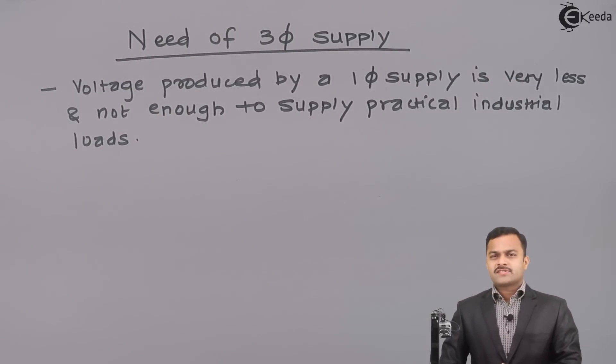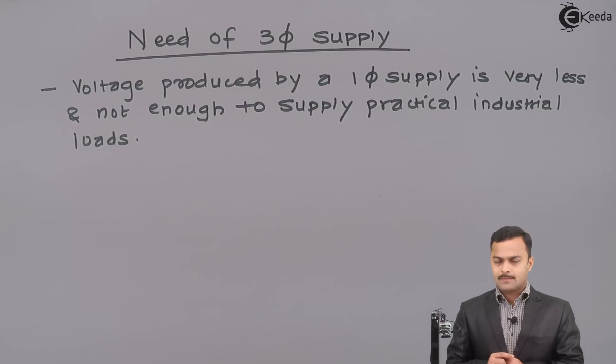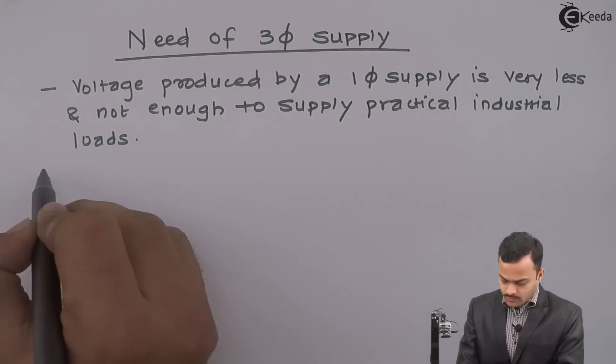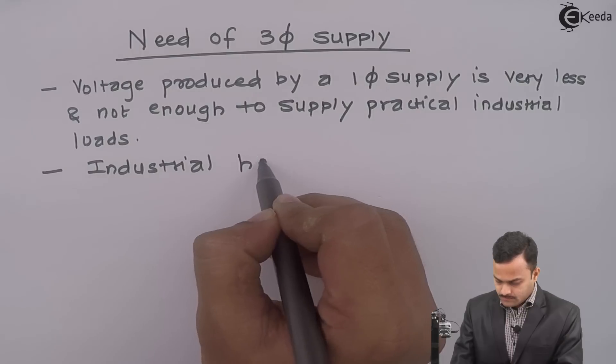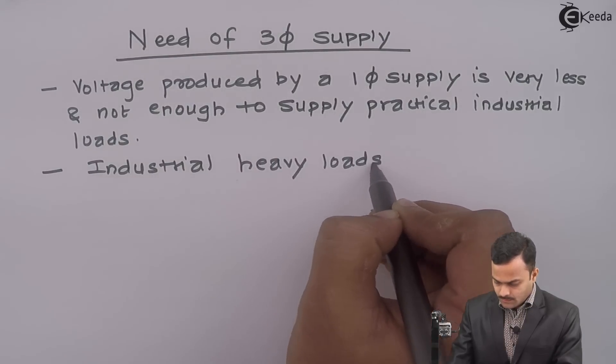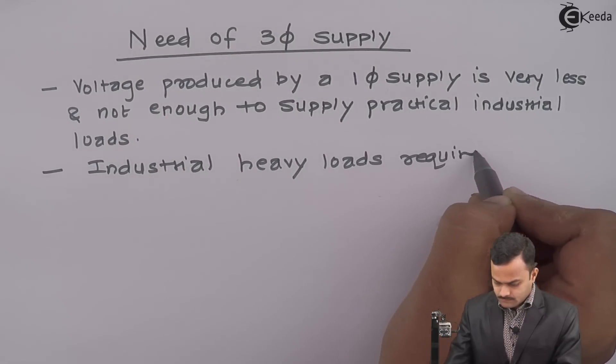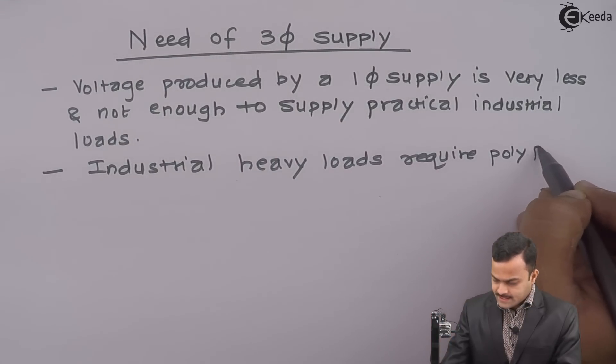You must have seen in industry, big machines are there for a production purpose. Those machines cannot work on single phase supply that we are having at our house. For that, we need a very high voltage which cannot be provided by single phase supply. So, industrial heavy loads require polyphase supply.